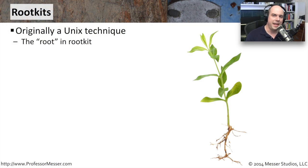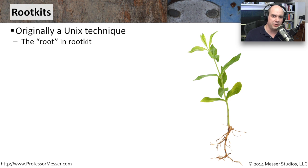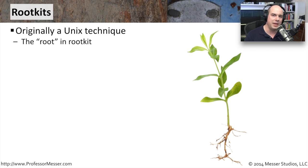Rootkits come from a name based on something you'll find in Unix-type systems. If you are the super user of a Unix system, then you are root — very similar to being the administrator on a Windows system. That's where the word comes from. If you have a kit of software that allows you access to a machine and gives you root access, then that is a rootkit.